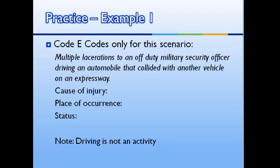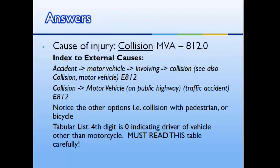Let's start with our cause of injury. We are going to start with our index to external causes. In the italicized text, this tracks the order of our main term and subterms. We first look under accident, find motor vehicle involving a collision, which directs us to code E812 with a cross reference to also look under collision. A faster way to get to that code would be to start under collision and then go to motor vehicle — it also takes us to the same code.